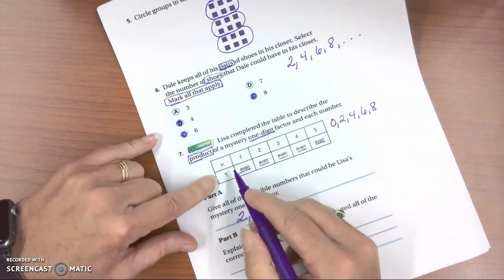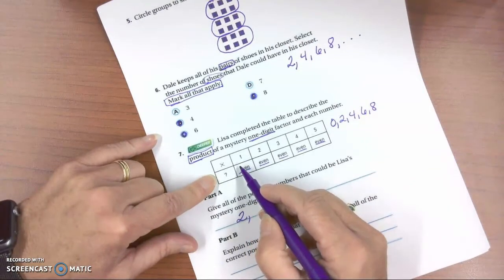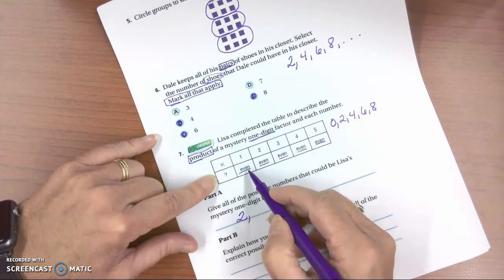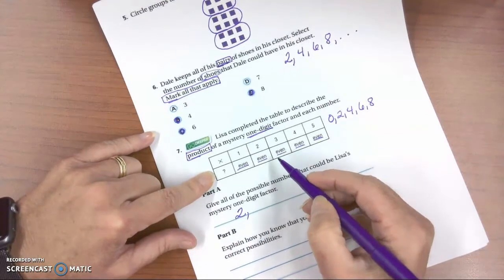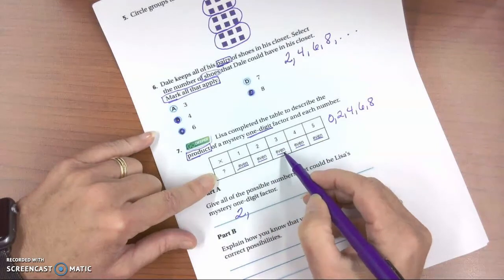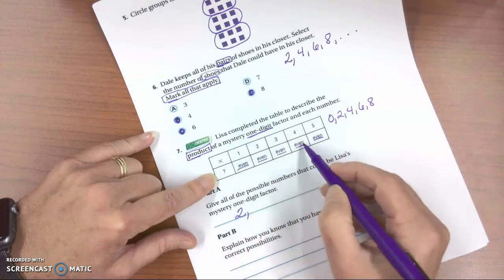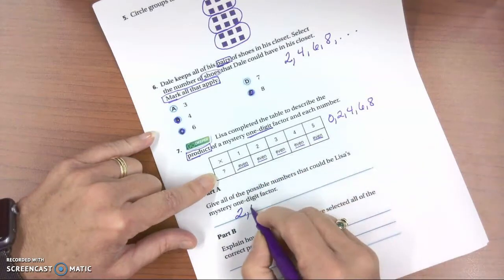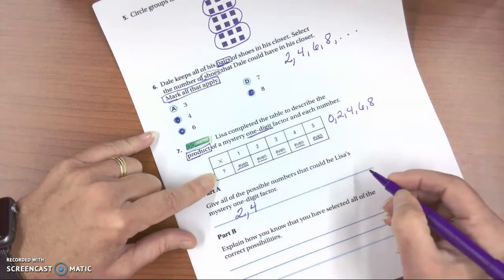What about 3? 3 times 1? Nope, it won't work because the answer would be 3, and that's an odd number. So what about 4? 4 times 1 is 4, 4 times 2 is 8, 4 times 3 is 12, 4 times 4 is 16, 4 times 5 is 20. 4 will work. All of my products are even.